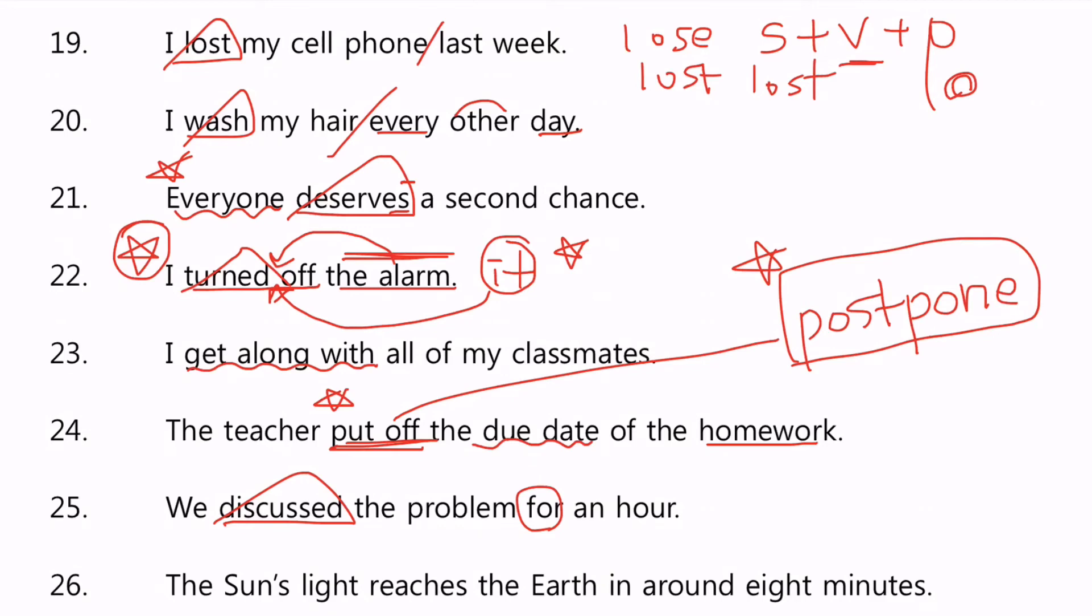이것도 중요한 포인트인데, 이거는 자동사가 아니라 타동사이기 때문에 뒤에 전치사가 안 와요. 그래서 여기다가 한국식으로 해석해서 discussed about, 이렇게 쓰면 틀린다.